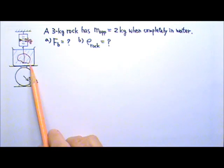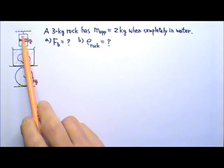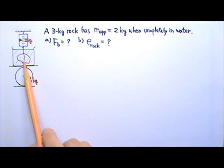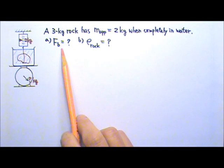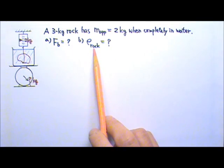A 3 kg rock has an apparent mass of 2 kg when completely submerged in water. Find A: the buoyant force acting on the rock, and B: the density of the rock.